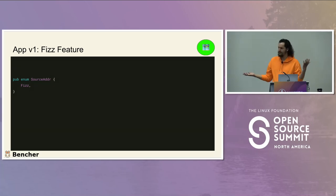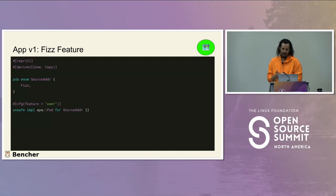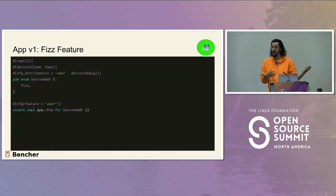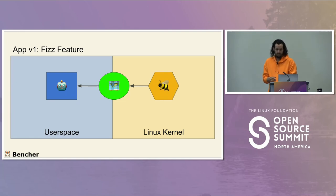For the shared map data, we have an enum in Rust. The only message we're sending over is Fizz at this point. We need to tell it that it can be represented as C, that it can be copied and cloned — which allows use of the AYA trait to send it over a map — and we also derive Debug so we can log it on the user space side.